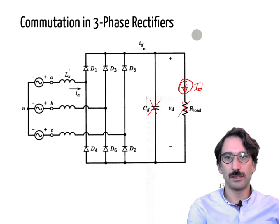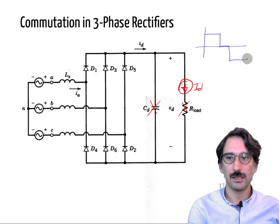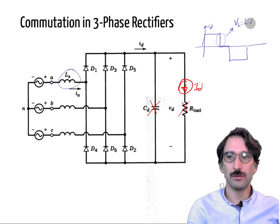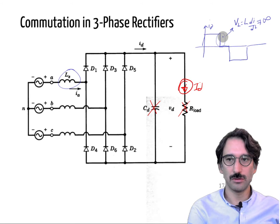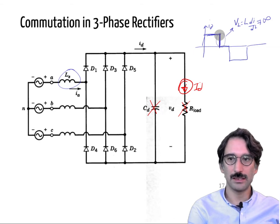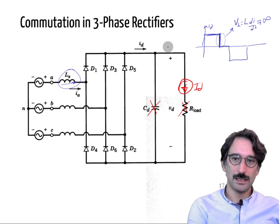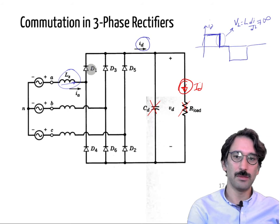In the previous case, the current waveform at phase A had sharp edges — it was Ia with abrupt transitions. But if we have those inductances, VL = L·dI/dt, which implies you would need infinite voltage to turn off an inductor current immediately to zero. So that waveform has to be modified — it doesn't come to a stop immediately.